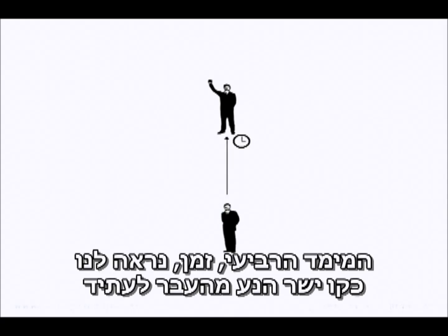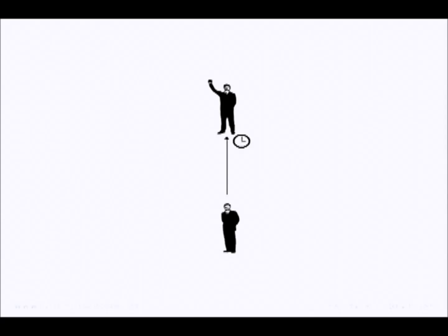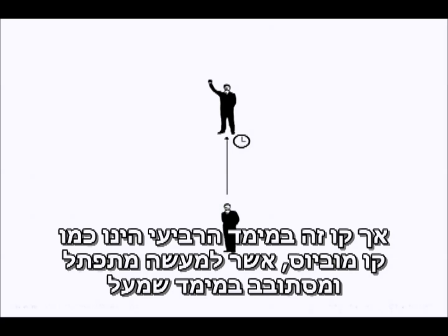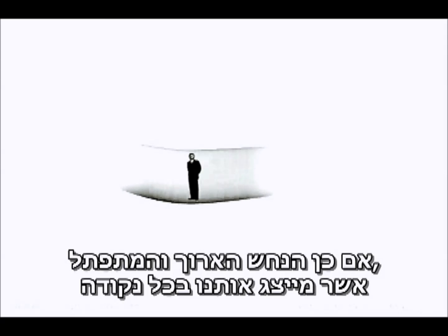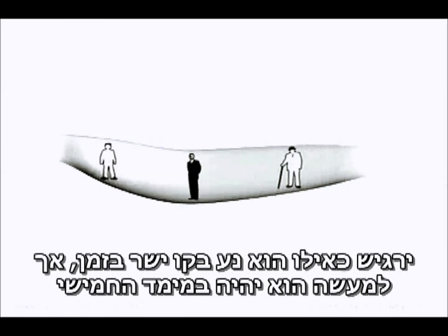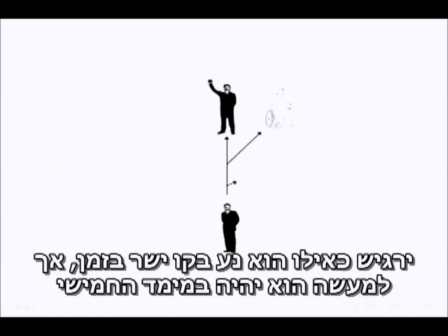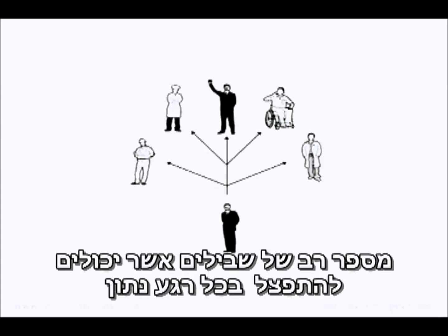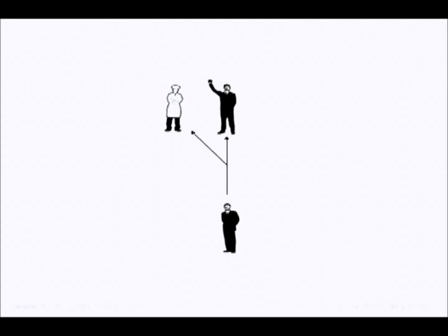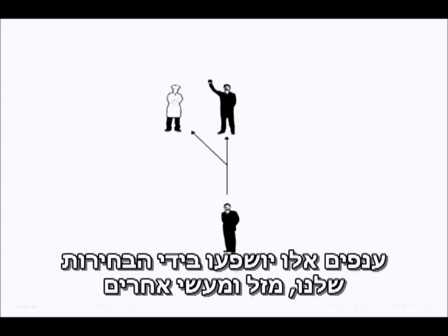The fourth dimension, time, feels like a straight line to us, moving from the past to the future. But that straight line in the fourth dimension is, like the Möbius strip, actually twisting and turning in the dimension above. So the long undulating snake that is us will feel like it is moving in a straight line in the fourth dimension, but there will actually be, in the fifth dimension, a multitude of paths that we could branch to at any given moment. Those branches will be influenced by our own choice, chance, and the actions of others.